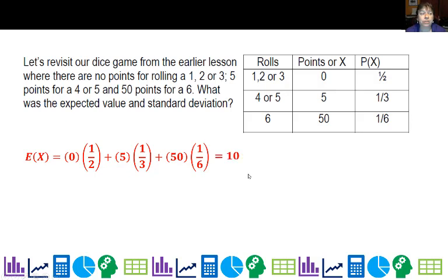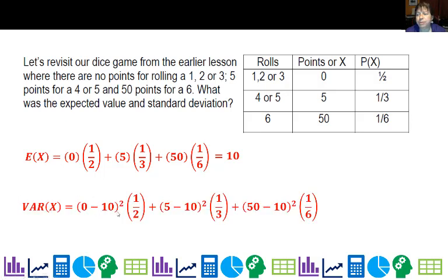I'm going to show variance, which is on your formula chart. Yes, your calculator can compute it, but this is not hard to write, so I expect you to write it. You get 325. The standard deviation is the square root, about 18.03. So there's our expected value and standard deviation.